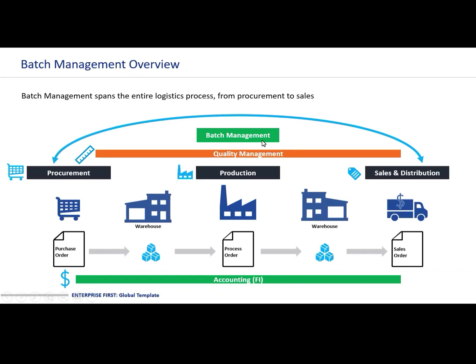Production: intelligent batches are created at the end of each production run to identify batches produced on a certain day during a specific production run. Sales and distribution — the outbound processing: sales order documents will be produced for each outbound delivery, which will hold all the batch information from the production and the procurement.